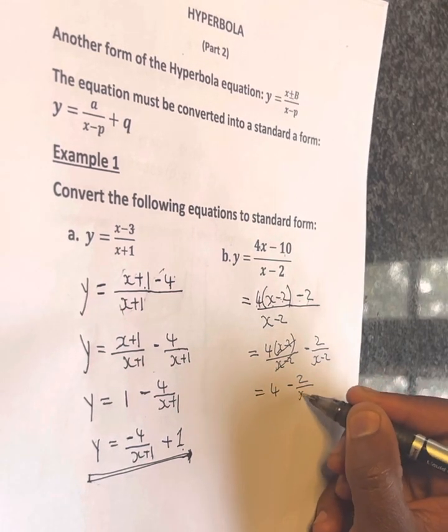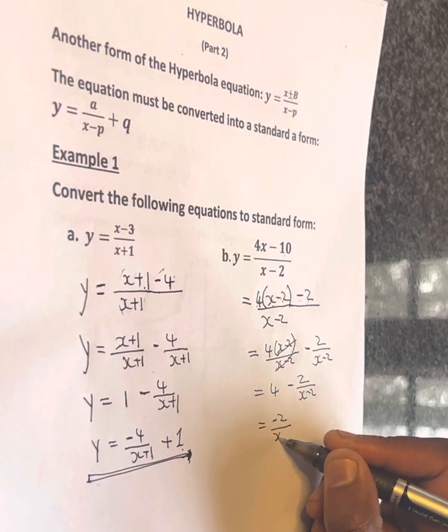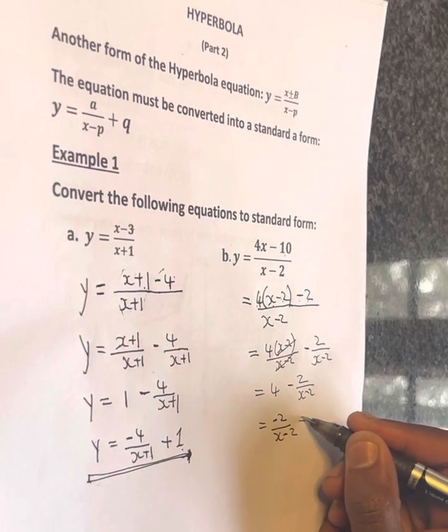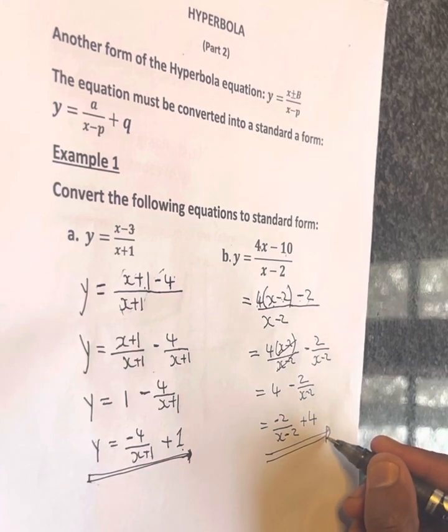This becomes 4x minus 2 over x minus 2. So this is negative 2 over x minus 2 plus 4. So this is the standard form.